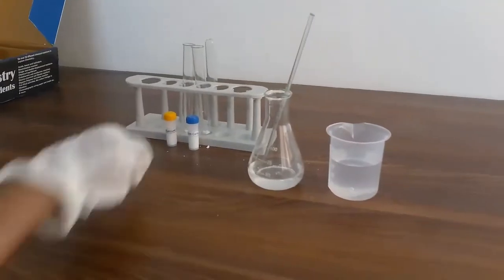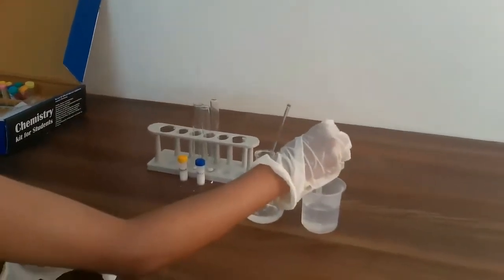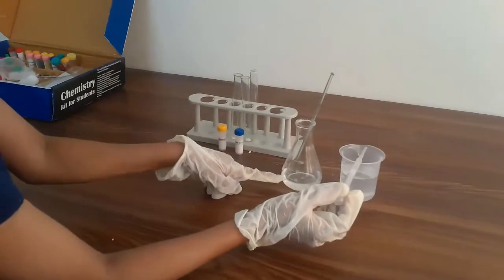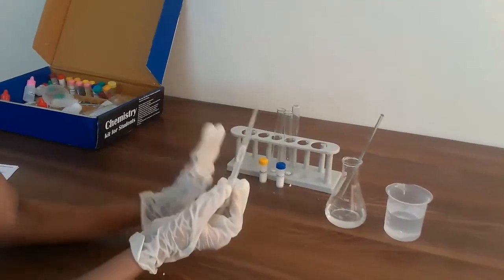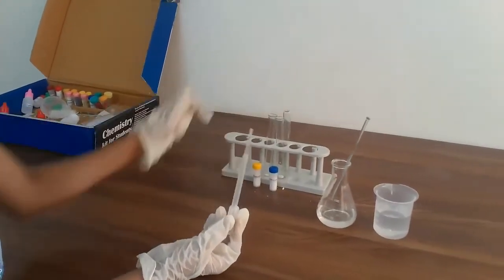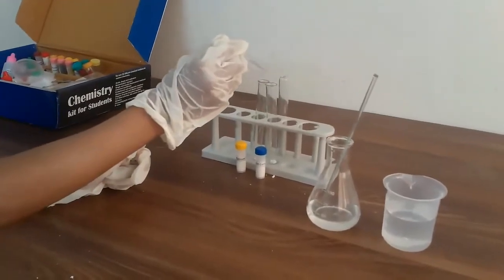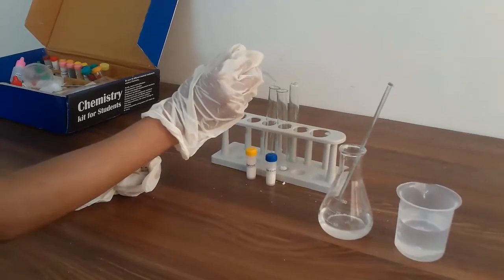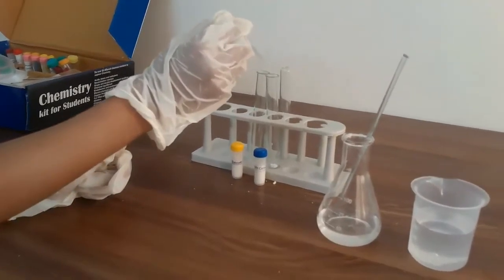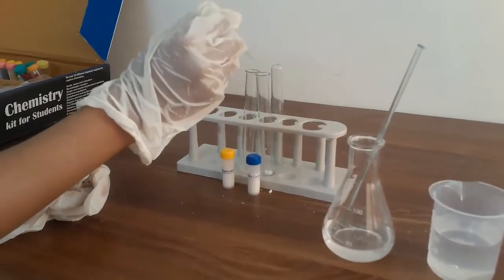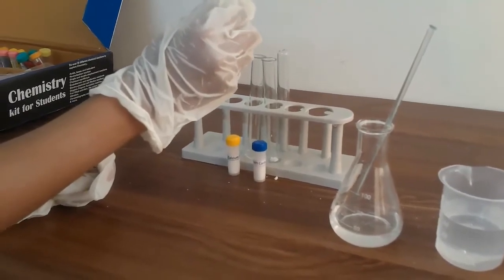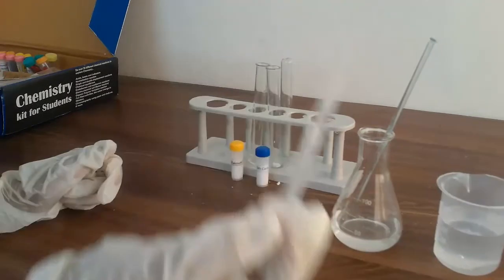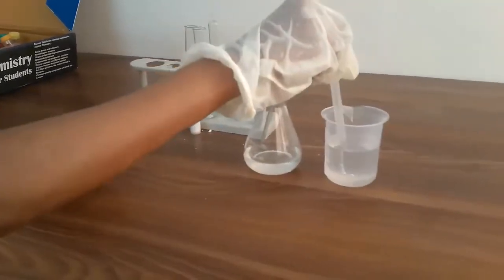Now the next step is to take your pasteur pipette and take some water from inside it. Take the clean water, not the water from which you just washed your spatula. And pour 25 drops of water inside the first test tube.